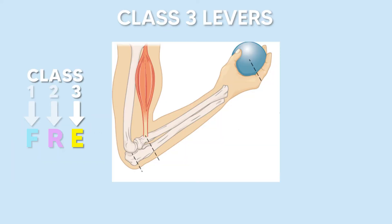An example of a class 3 lever in the human body would be the biceps brachii interacting with the forearm. The fulcrum here would be the elbow joint, the biceps brachii inserting at the radius would be the effort, and then the weight in the hand would be the resistance.